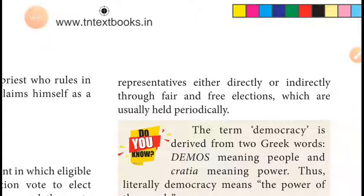Elections are usually held periodically — once every five years. Representatives are elected by the people, and it is only in democracy that this is possible. It is not possible in theocracy, monarchy, or aristocracy. Only in democracy can the people elect their representatives directly or indirectly through free and fair periodic elections.